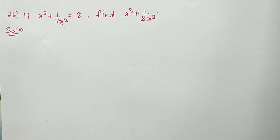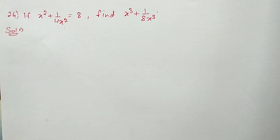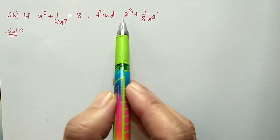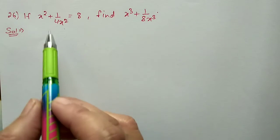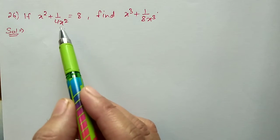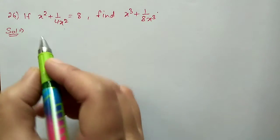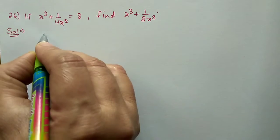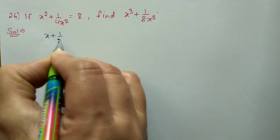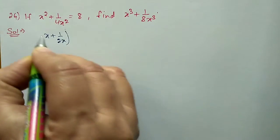Next, question number 26: if x² + 1/4x² = 8, find the value of x³ + 1/8x³. Here we cannot find this value directly — first we will find out the value of x + 1/2x, since the denominator has 4x².